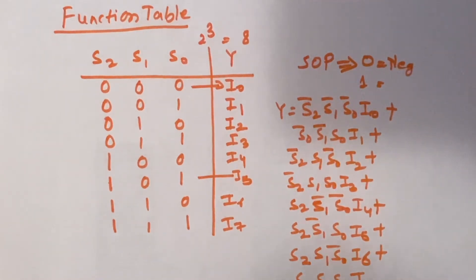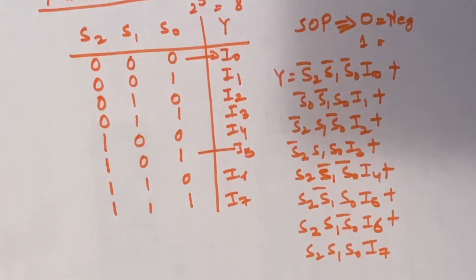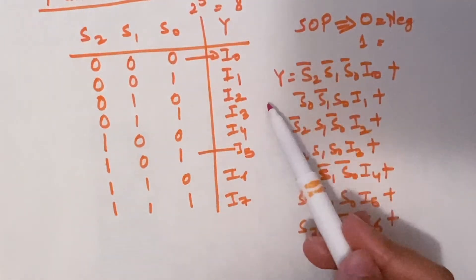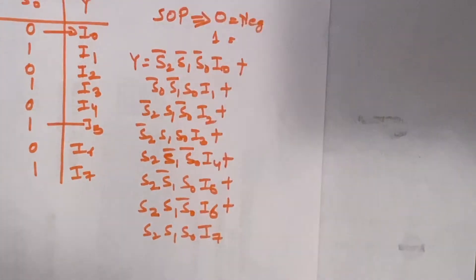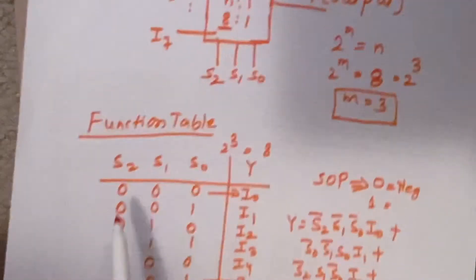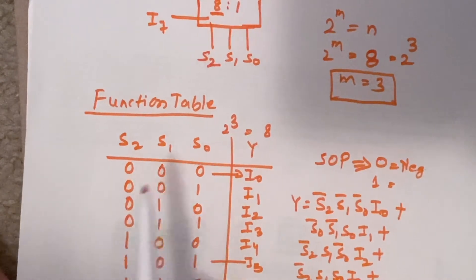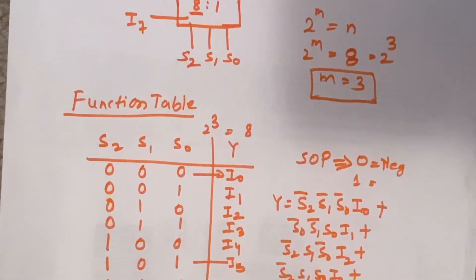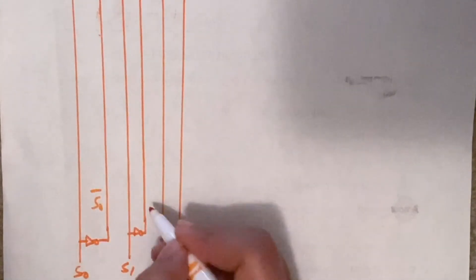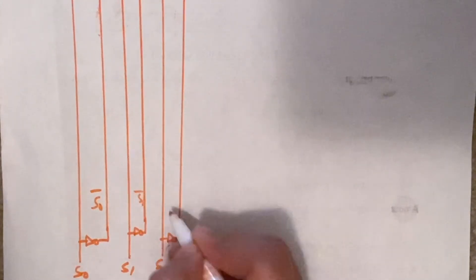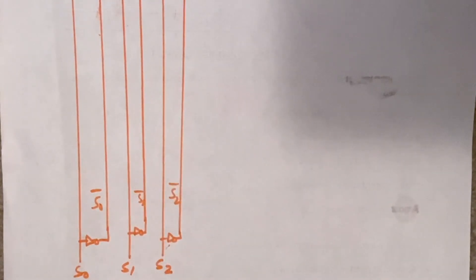Hope you are all getting how we derived the value of Y. Now we will draw the logic gate diagram for the 8-to-1 mux using this expression. We have three selection lines S2, S1, S0, so first we will draw the three selection lines and their complemented terms: S0-bar, S1-bar, and S2-bar.